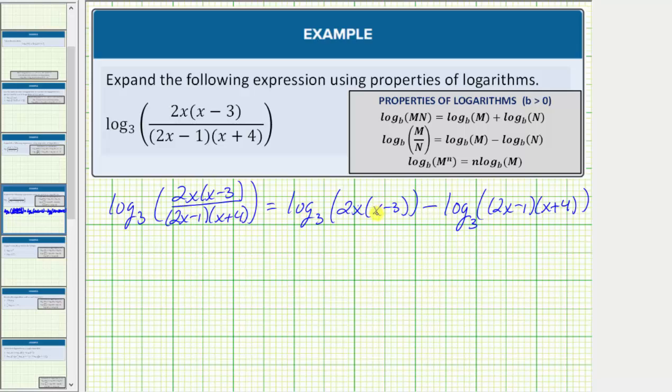Notice now we have a log of a product here as well as here. We can expand further by using the product property of logarithms, which is shown here. Log base b of m times n equals log base b of m plus log base b of n.